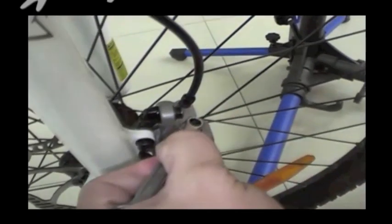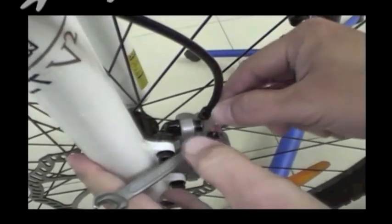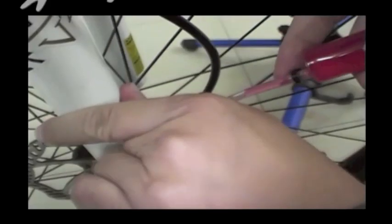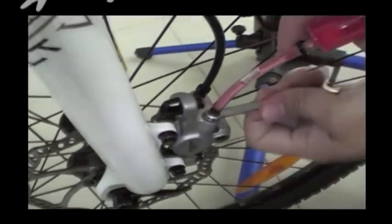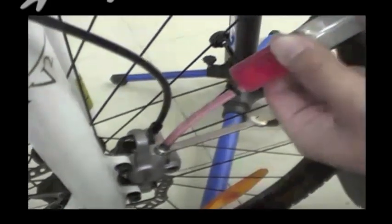Moving to the caliper, attach the 7mm spanner to the bleed bolt and attach the hose from the syringe securely on top. Simply turn counterclockwise to loosen, thus creating a flow for the oil.